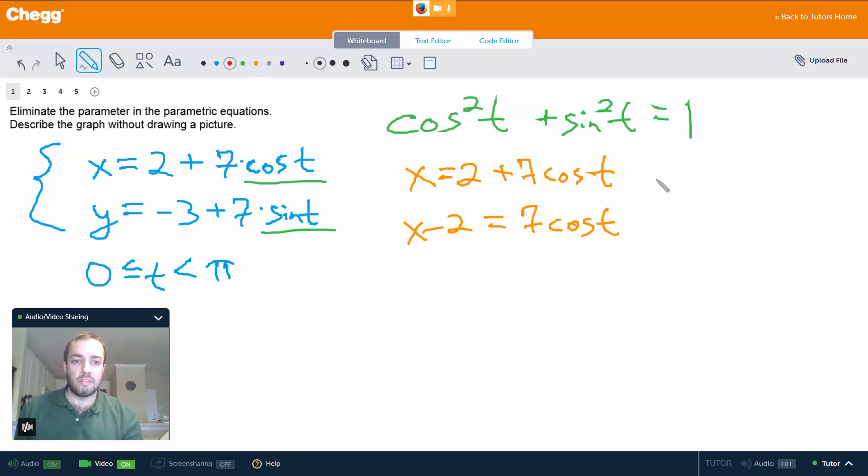And then we also have y = -3 + 7sin(t). Now what that means is y + 3 = 7sin(t).